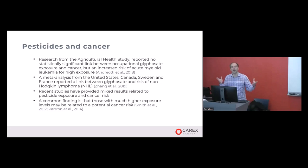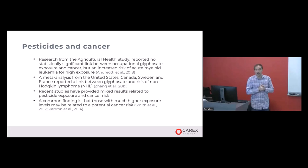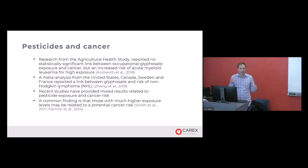More recent work in the US, including the large Agricultural Health Study, reported no statistically significant link between glyphosate exposure and cancer overall, but did find an increased risk of certain leukemias for those in the highest exposure categories. A meta-analysis across the US, Canada, Sweden, and France also reported a link between glyphosate and non-Hodgkin's lymphoma. A common finding across the literature is that it's those with much higher exposure levels where a relationship to cancer risk starts to emerge.